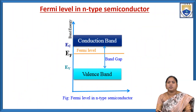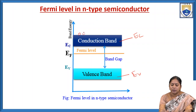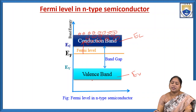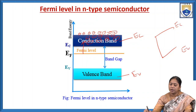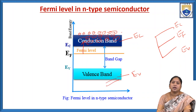This is the energy band diagram of the Fermi level in N-type semiconductors. The topmost band is the conduction band and the bottom is the valence band — EC and EV respectively. The probability of occupying electrons in the conduction band is more, so the Fermi level is closest to the conduction band. Whereas in intrinsic semiconductors, the number of electrons equals the number of holes, so the Fermi level lies between the conduction band and valence band.